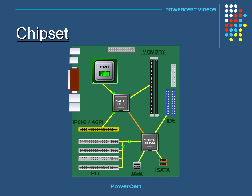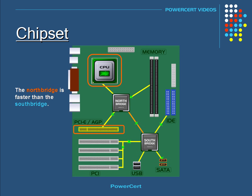The North Bridge is faster than the South Bridge. That's because the CPU, the PCIe, AGP, and memory are the most used and most important components of the motherboard, so they need to operate at the highest speeds possible.